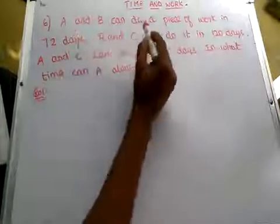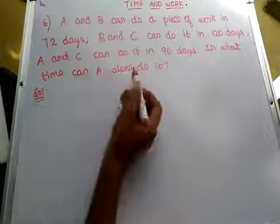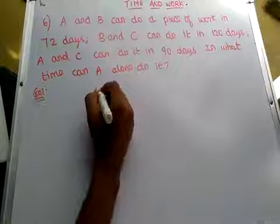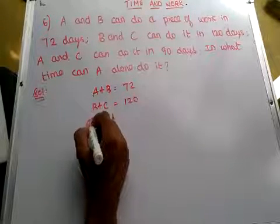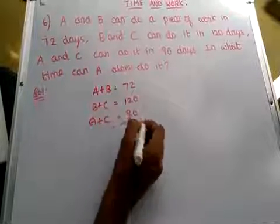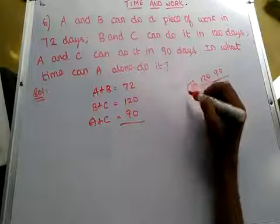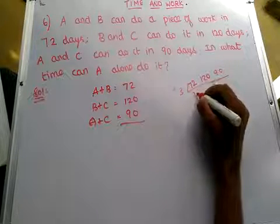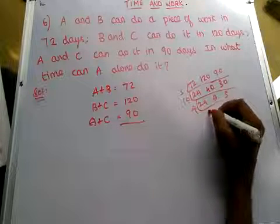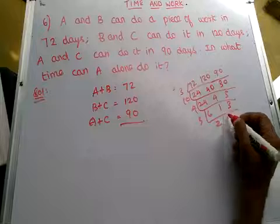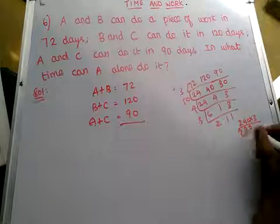Our next problem: A and B can do a piece of work in 72 days, B and C in 120 days, A and C in 90 days. In what time can A alone do the work? A+B = 72 days, B+C = 120 days, A+C = 90 days. We take LCM of 72, 120 and 90. The LCM is 720.